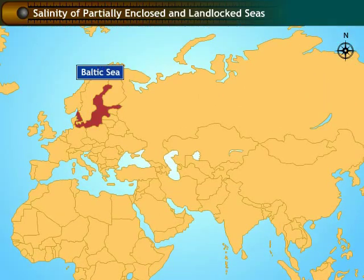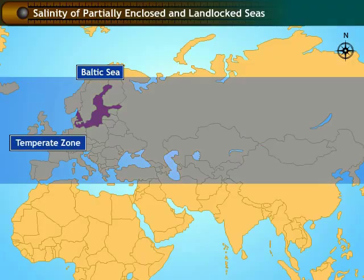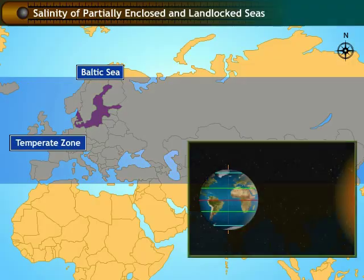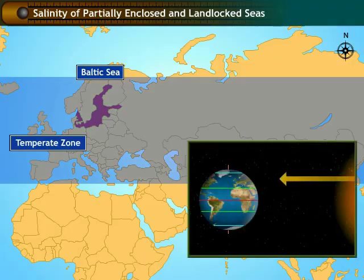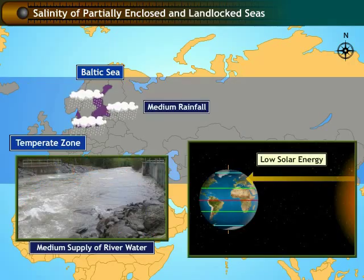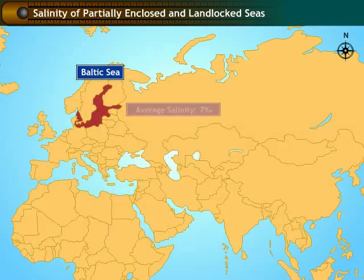The Baltic Sea is located in the temperate region. The sunlight reaching this region is low. The region receives medium rainfall with a good supply of fresh water. Hence, the average salinity of this sea is only 7 parts per thousand.